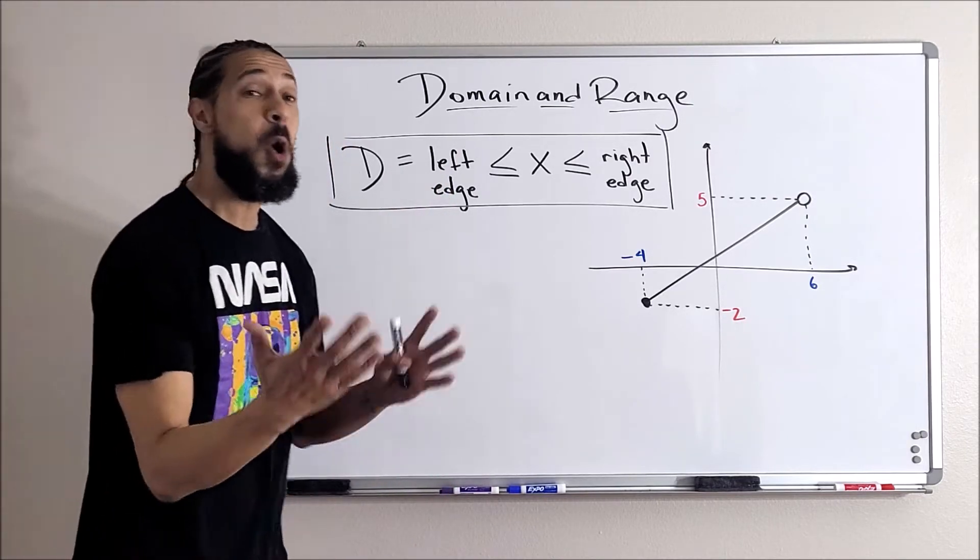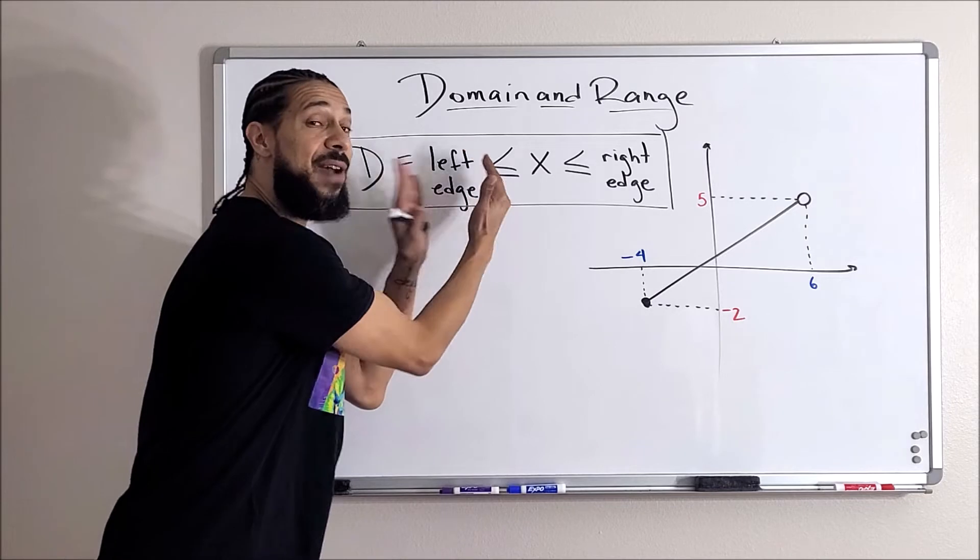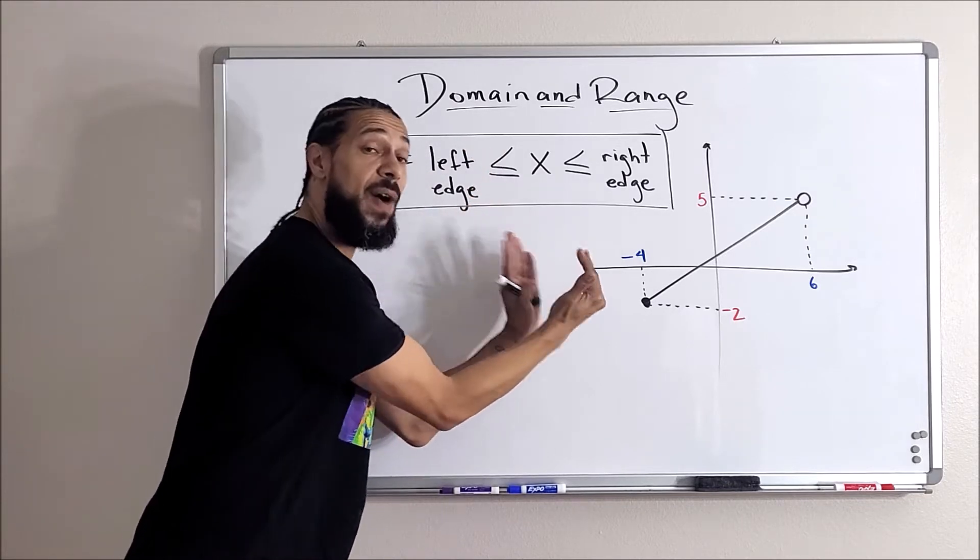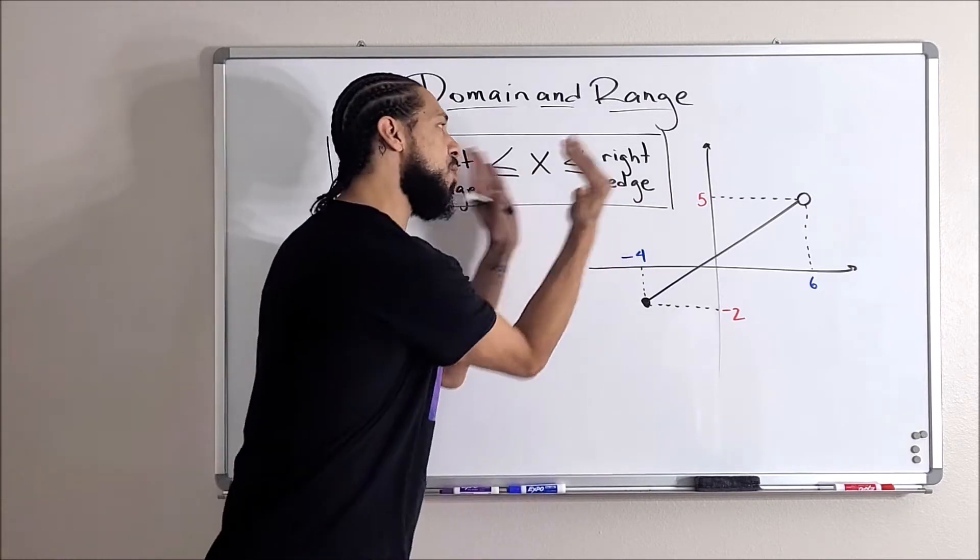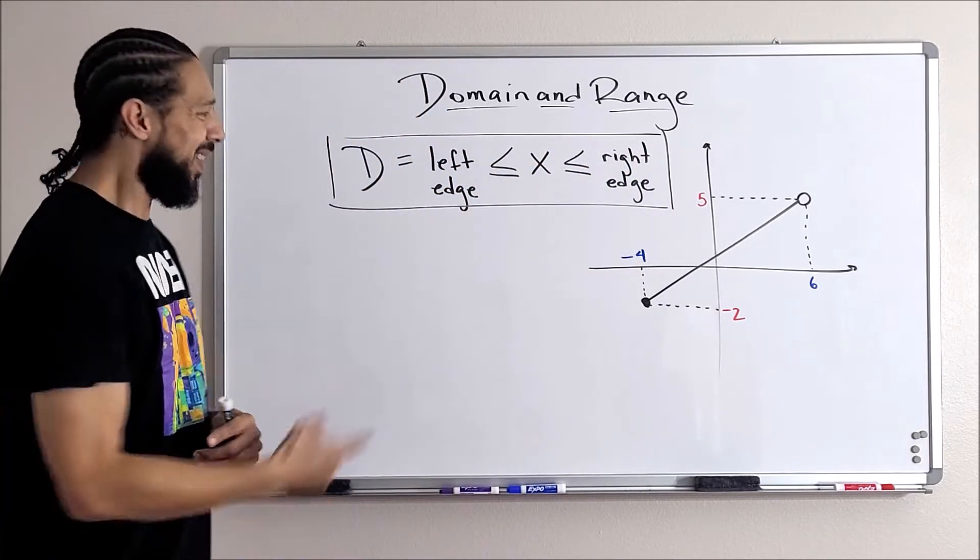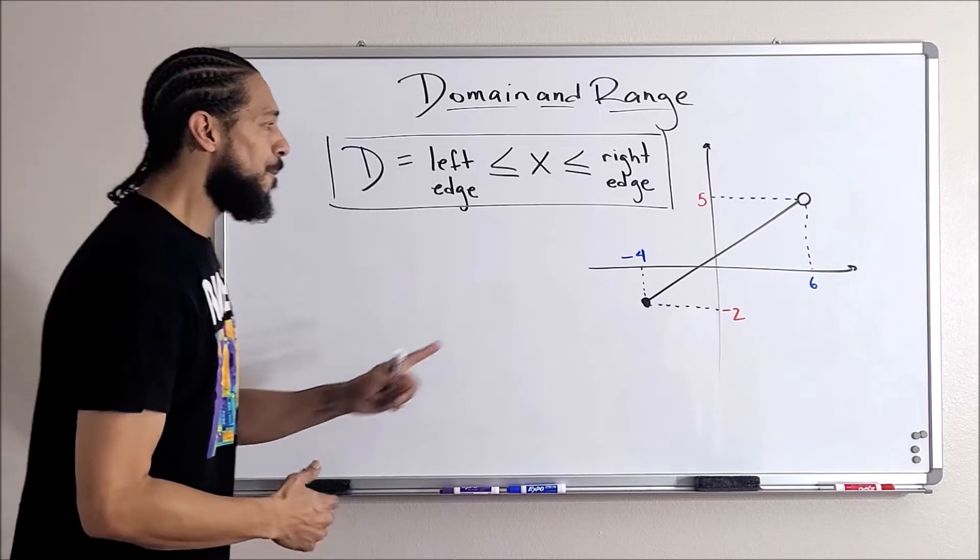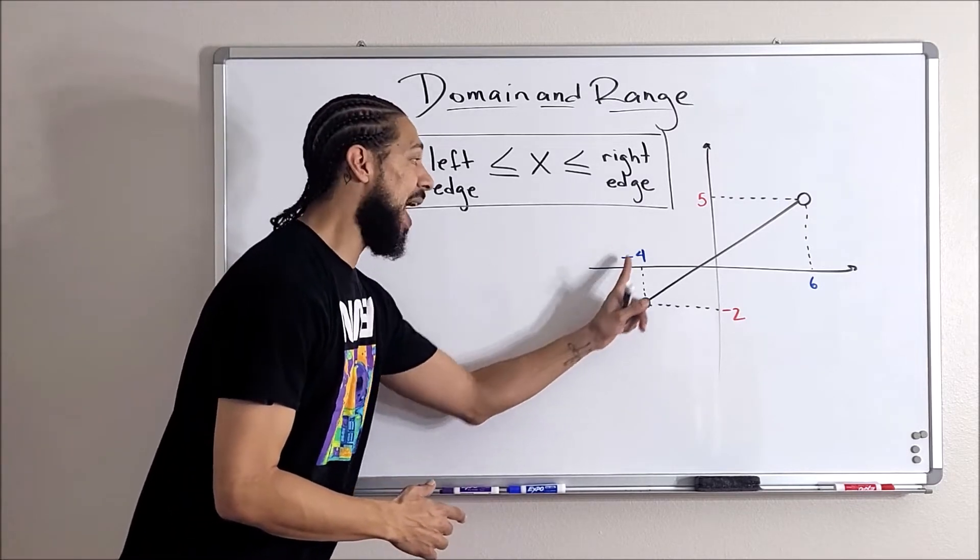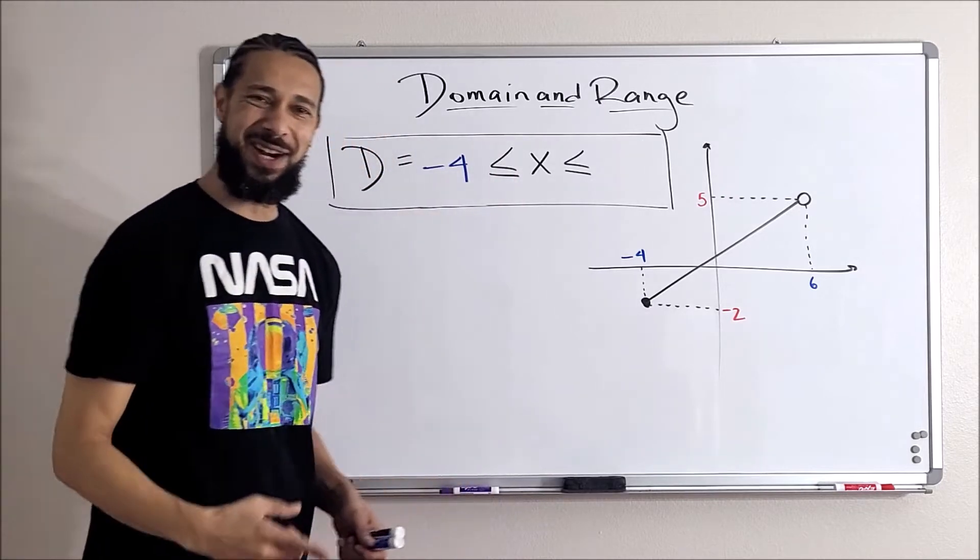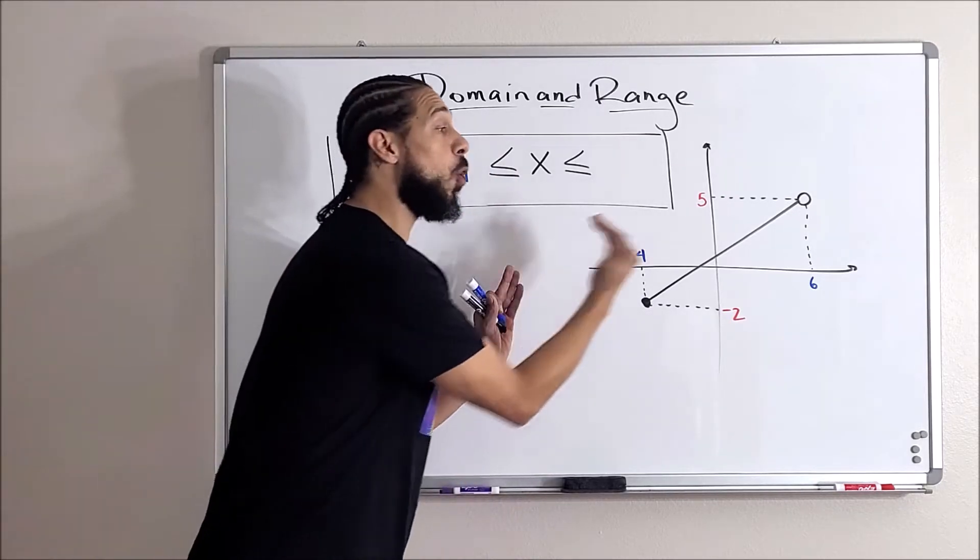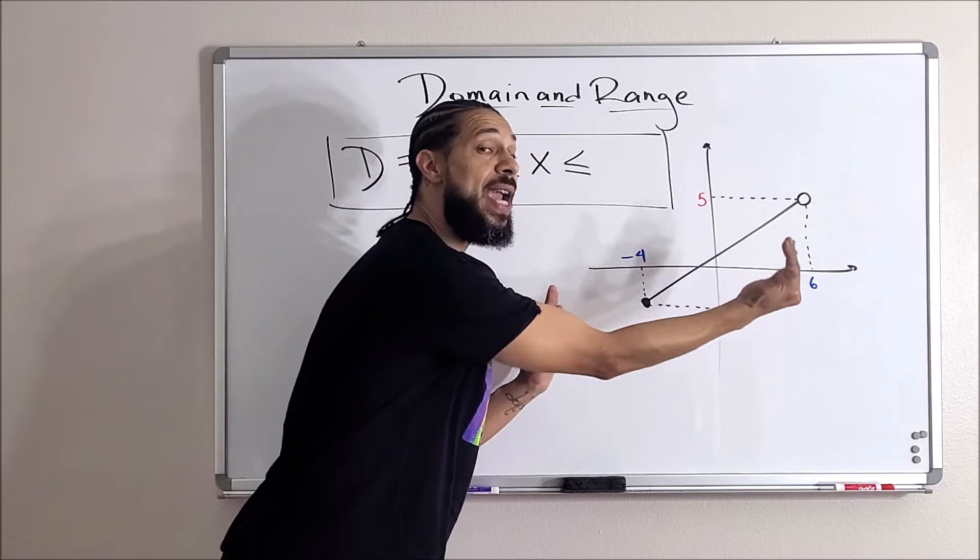So all I'm going to do is find the left edge of my graph, the x value that goes with it, put it here because domain is x's, and the right edge of my graph x value, put it there. Let's talk about this graph. The left edge of my graph is at x equals negative four, and that graph goes all the way out to an x value of, where's the right edge of my graph? At six.